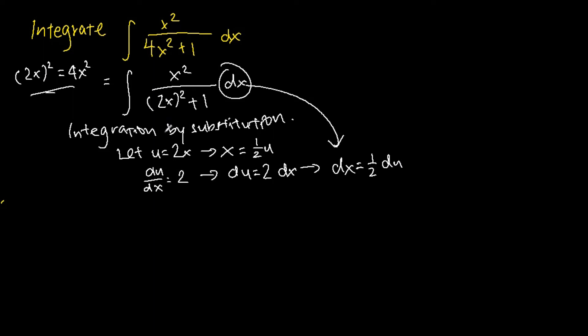We make dx the subject, we will get dx equals half du. Now we have dx equals half du and x equals half u. We can further do the change of variables. So we get the integral of x squared, x squared is basically just half u, the whole thing squared, over 2x is u. So we have u squared plus 1 and then my dx equals half du.